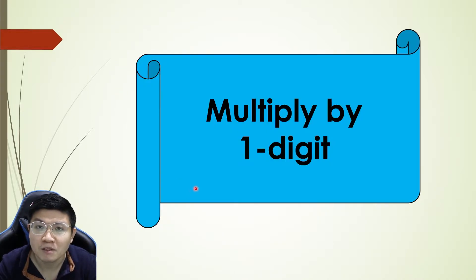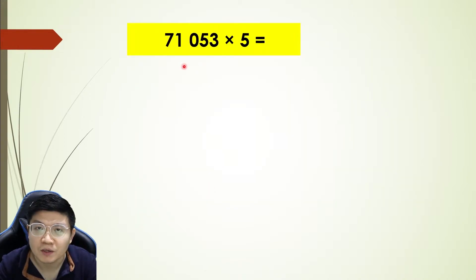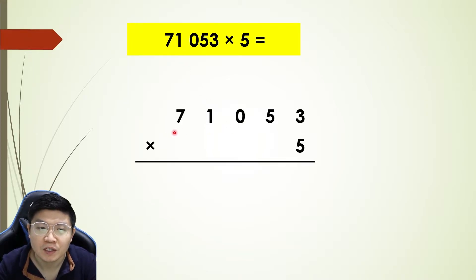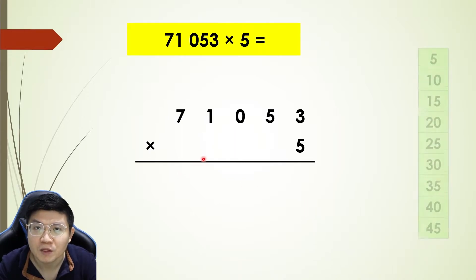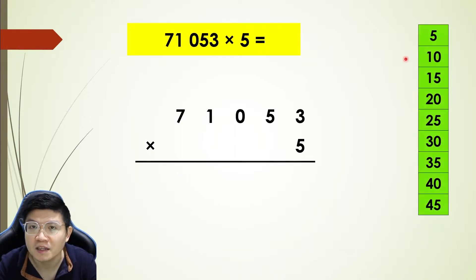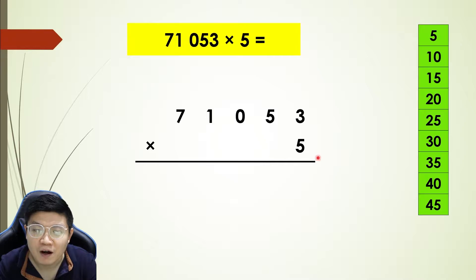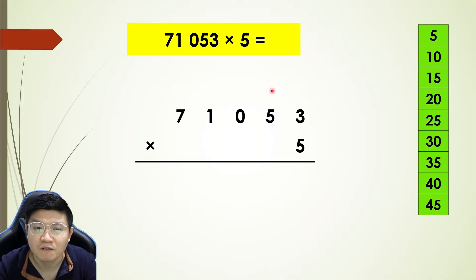Next, multiply by one digit. I will give you a number: 71,053 times 5. We arrange them in proper standard form. I need the times table of five. Five times three — one, two, three... fifteen. Therefore I put one here and five here.